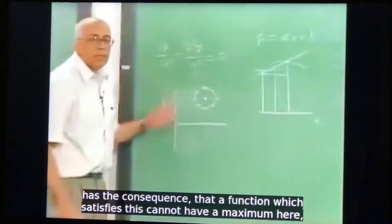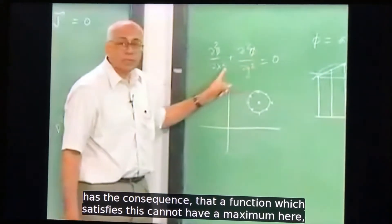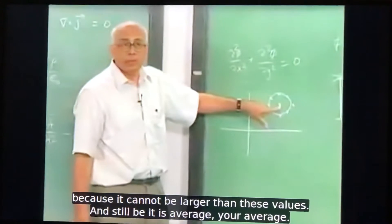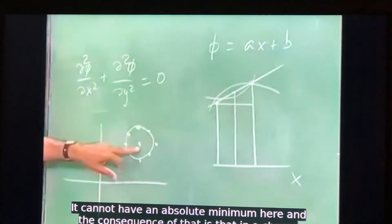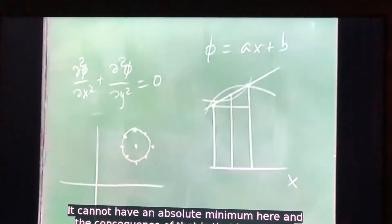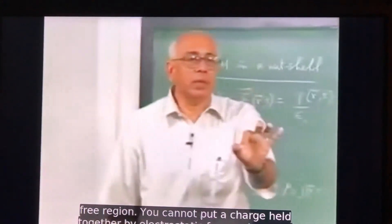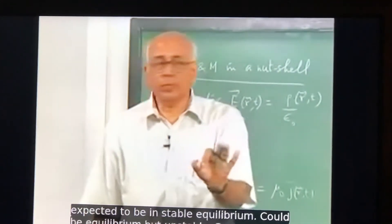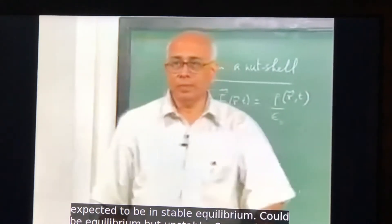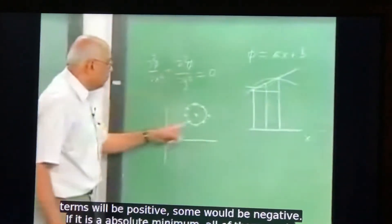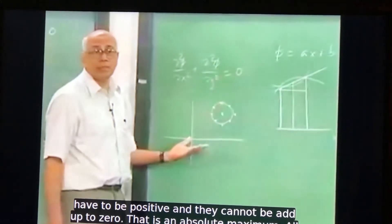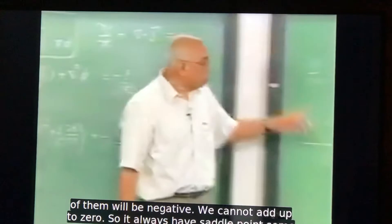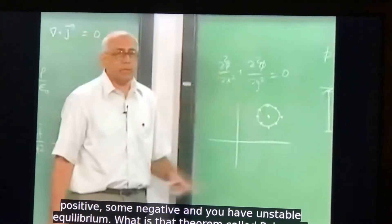In electrostatics, this has the consequence that a function satisfying Laplace's equation cannot have an absolute maximum or minimum, because it cannot be larger — or smaller — than all surrounding values and still equal their average. The consequence is that in a charge-free region, you cannot hold a charge in stable equilibrium by electrostatic forces alone. There could be equilibrium, but it's unstable. Some of the force components would be positive, some negative — you'd always have saddle points.